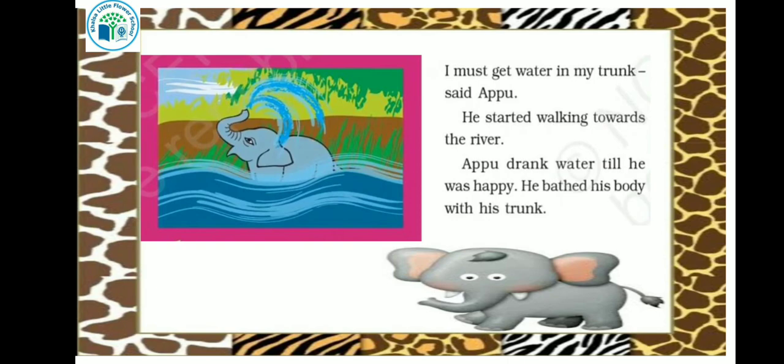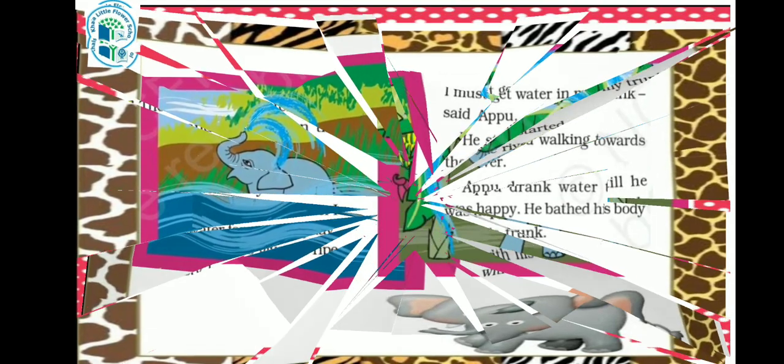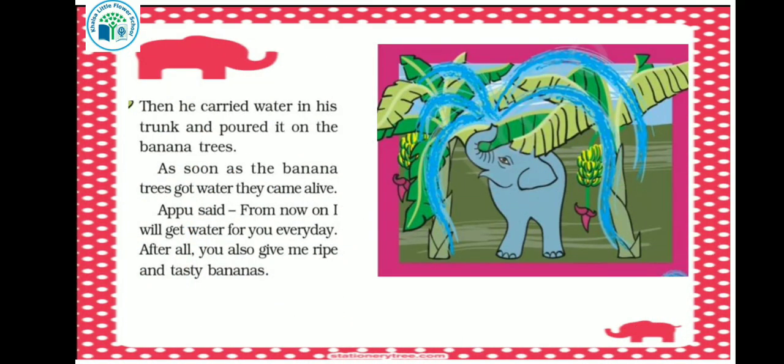Appu drank water till he was happy. Appu drank the river water. He bathed his body with his trunk. Then he carried water in his trunk and poured it on the banana trees. He filled water in his trunk and came to the tree and poured water on the banana tree.